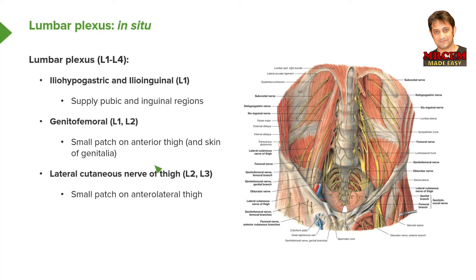We also have the lateral cutaneous nerve of the thigh, coming from L2 and L3. We can see it passing from deep to psoas major. It supplies a small patch on the anterolateral aspect of the thigh.